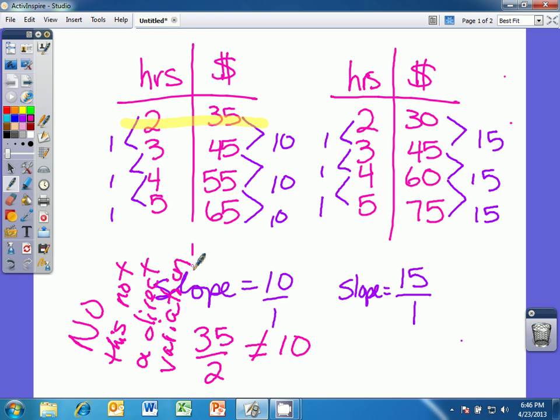If we take a look at table 2, let's see if that meets the requirement. Let's take the first point, 2, 30. Does that equal the slope? Well, 30 over 2 does indeed equal 15 over 1. So yes, this is a direct variation function, because that holds true for each one of the other points: 45 over 3, 60 over 4, and 75 over 5. So table 2 is a direct variation function.